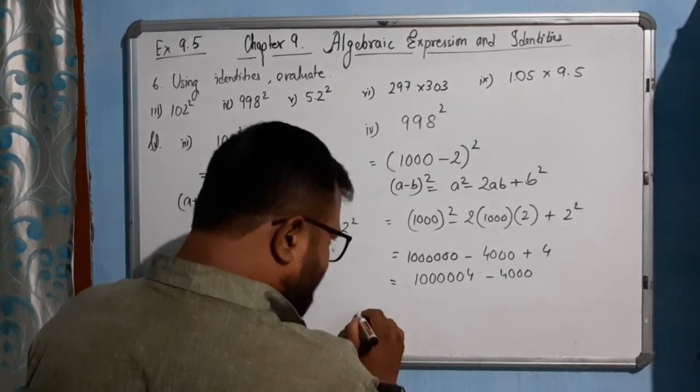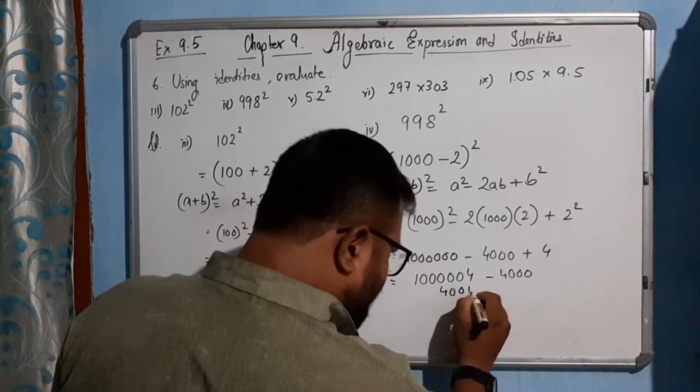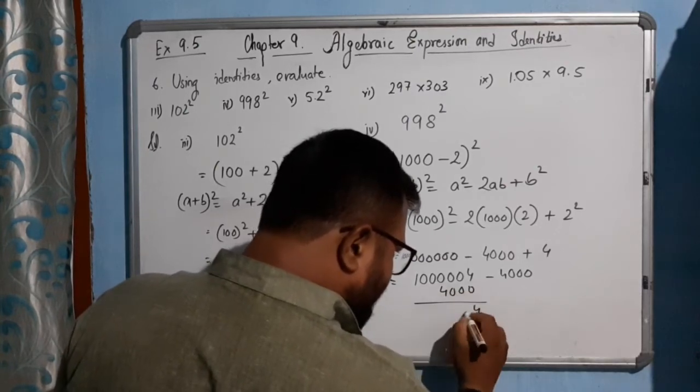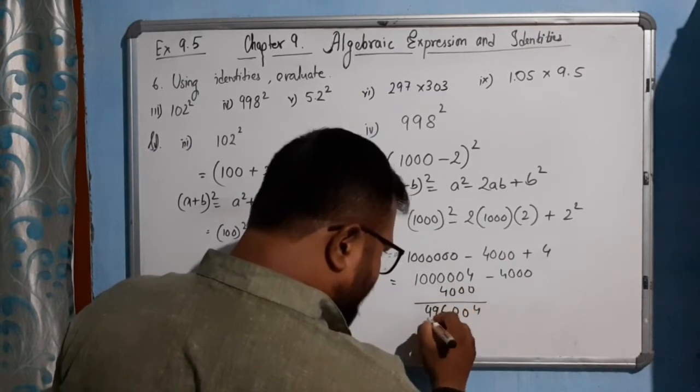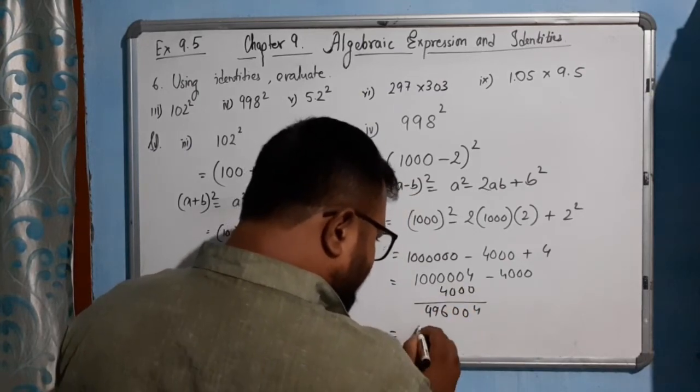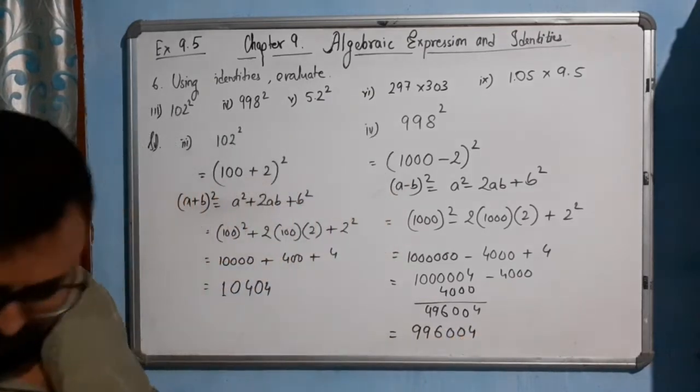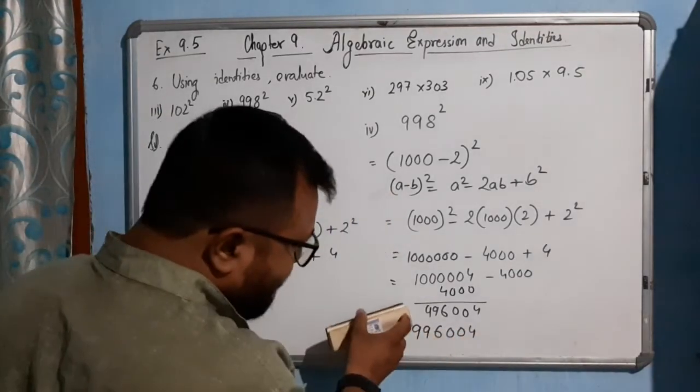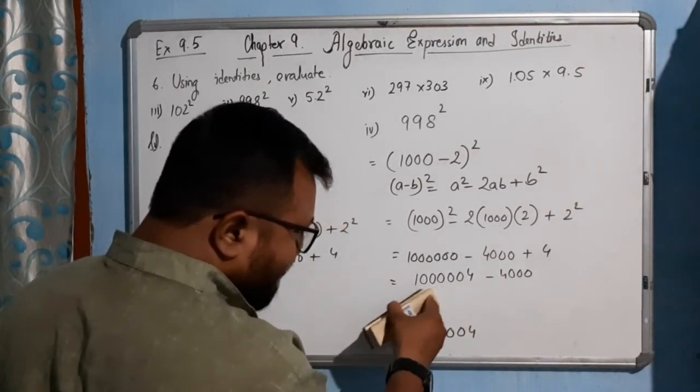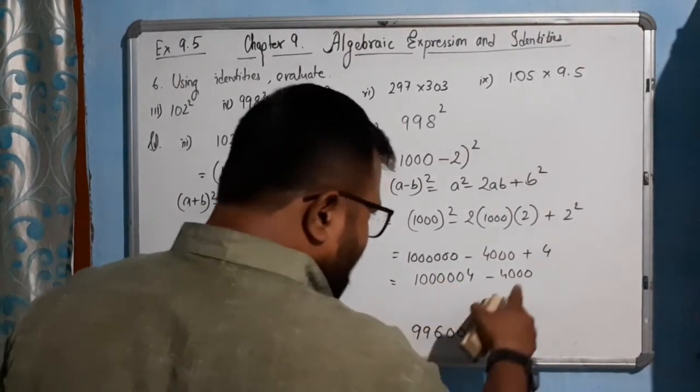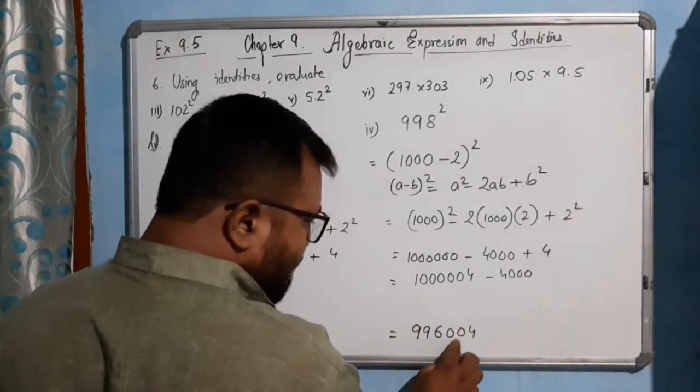So it will be 1000 square minus twice 1000 into 2 plus 2 square. That's 1,000,000 minus 4000 plus 4. Let me solve it here. After subtracting 4000 from this value, we will get 996,004.